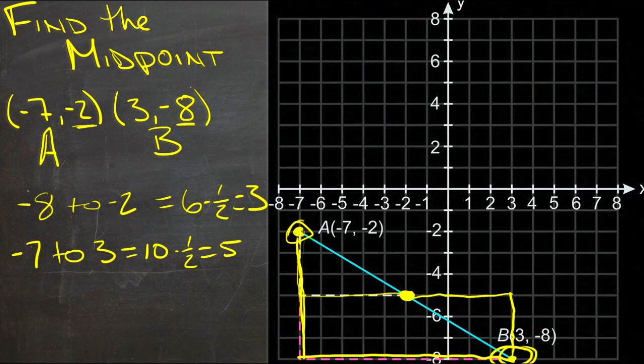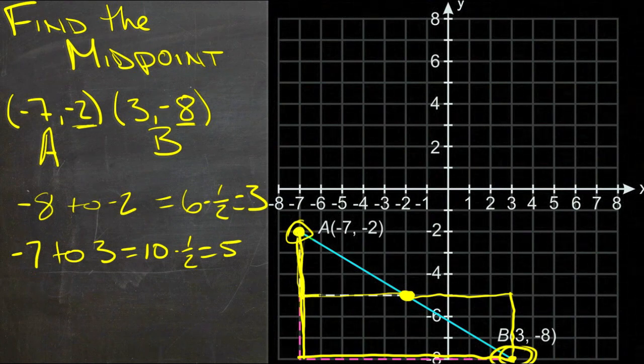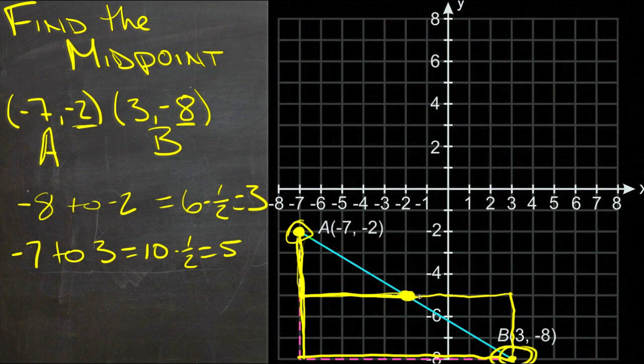If we start with this point, we'll go down 3, 1, 2, 3, and over 5, 1, 2, 3, 4, 5, and the other direction. And that also gets us to the midpoint.